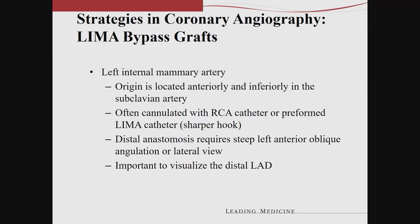The left internal mammary is now the most important bypass. Its origin is located inferiorly in the subclavian, but also a little bit anterior — so it's not a simple matter of getting a catheter to scrape the bottom of the subclavian. You have to do some manipulation to find that anterior deviation. The right coronary artery catheter is most often used, but the LIMA catheter is designed with a little sharper bend and usually gets a little better cannulation. The problems with LIMA are almost never in the body of the LIMA, but the distal anastomosis is an issue, particularly within the first year after bypass surgery.